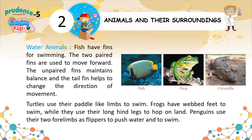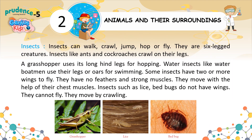Penguins use their two forelimbs as flippers to push water and to swim. Insects can walk, crawl, jump, hop, or fly — they are six-legged creatures. Insects like ants and cockroaches crawl on their legs. A grasshopper uses its long hind legs for hopping. Water insects like water boatmen use their legs as oars for swimming. Some insects have two or more wings to fly; they move with the help of their chest muscles. Insects such as lice and bed bugs do not have wings — they cannot fly and move by crawling.